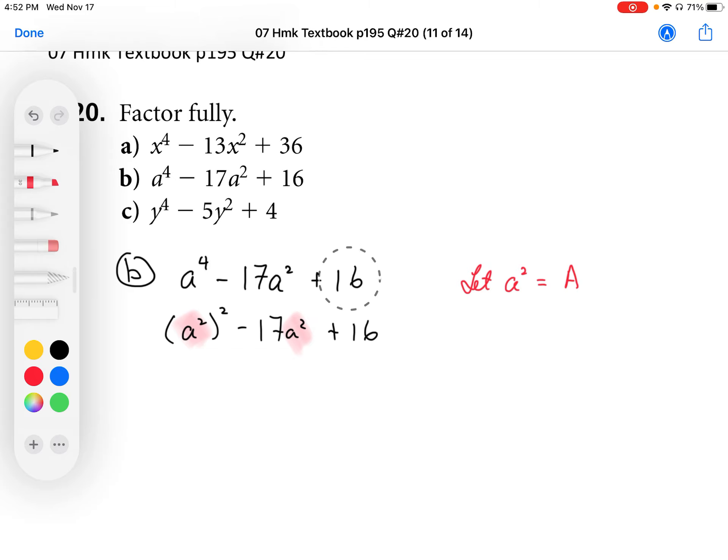This really is following a quadratic pattern and it's easier to see when we can replace the a squared with another variable A. So when I replace the a squared with A, I'm going to end up with big A squared minus 17A. The a squared is replaced by the A, and then we end up with plus 16.